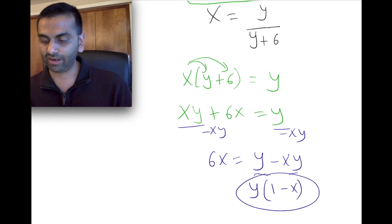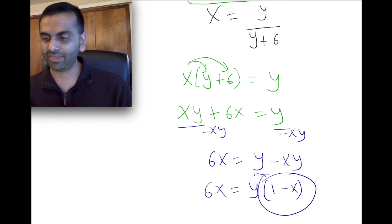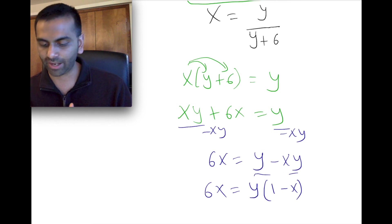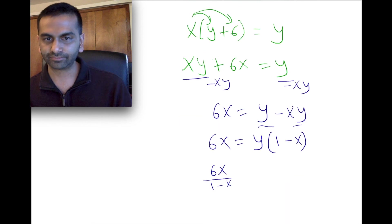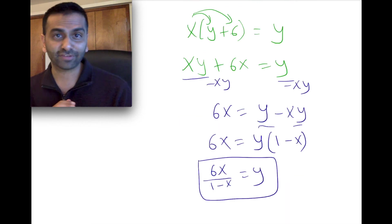So again, you can verify, you can distribute this to make sure you get the same thing, Y minus XY. But now this is no different than some constant times my Y. So if some number times your Y equals 6X, I'll just divide by that thing, that 1 minus X to get your Y on its own. So you have 6X over 1 minus X equals Y. And that's the final answer.